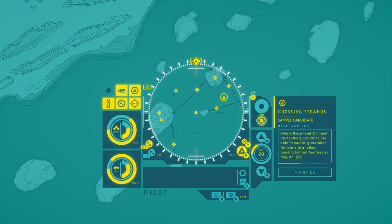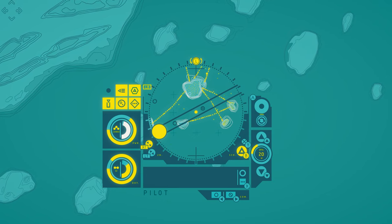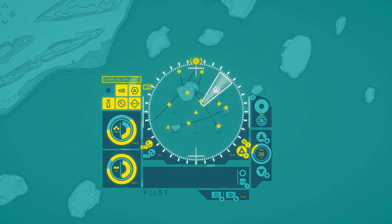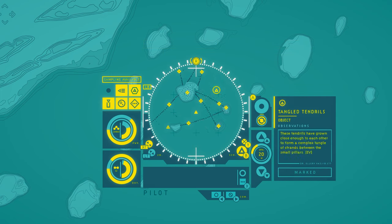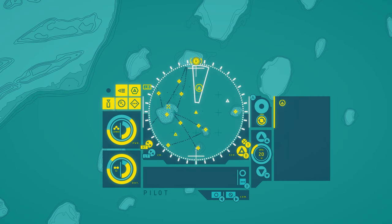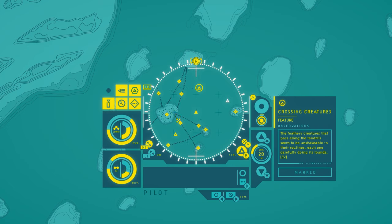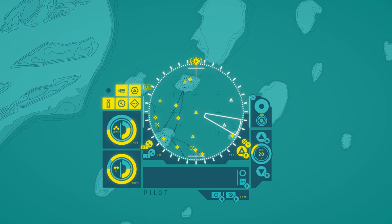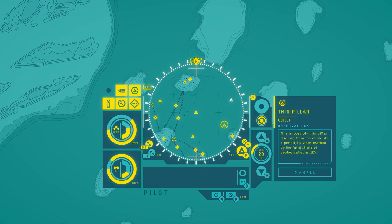Crossing strands. Where these tendrils meet the feathery creatures are able to carefully clamber from one to another, leaving behind feathers as they do. Another sample candidate. Is this stuff I already have? Yes, thank god. Tangled tendrils. These tendrils have grown close enough to each other to form a complex tangle of strands between the small pillars. Crossing creatures. The feathery creatures that pass along the tendrils seem to be unshakable in their routines, each one carefully doing its rounds. Thin Pillar. This impossibly thin pillar rises up from the murk like a pencil, its sides marked by the faint strata of geological eons.